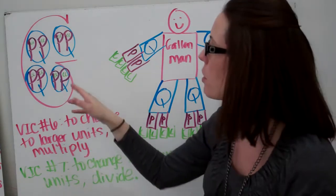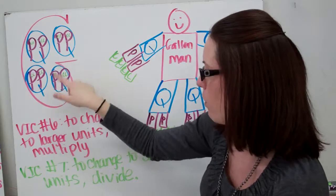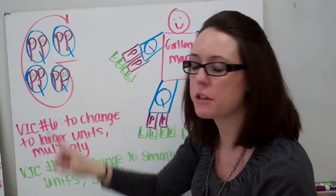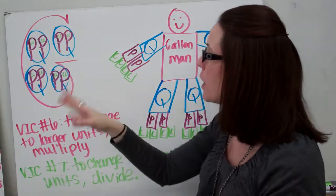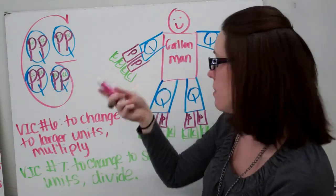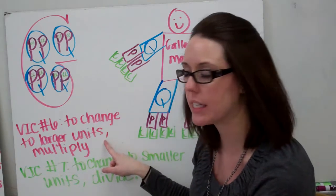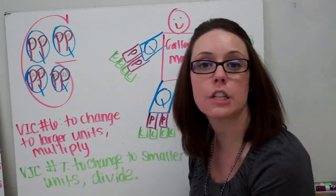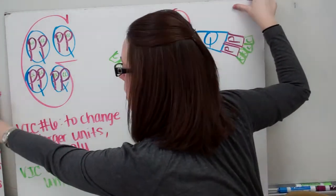Another way is to draw a big G. In one gallon there are four quarts, so draw four Q's. In each quart there are two pints, so there are two P's in every quart. And every pint has two cups, so there are two C's in every P. These are just ways to help you remember customary units. To change to larger units within the customary system, we multiply. To change to smaller units within the customary system, we divide. So to go larger you multiply, to go smaller you divide.